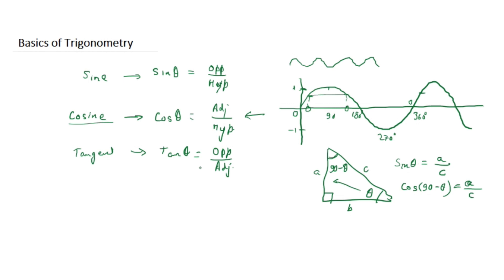These three ratios you have to remember. There is a small memory trick that everybody uses, called SOHCAHTOA. SOH means sine is opposite over hypotenuse, CAH means cosine is adjacent over hypotenuse, and TOA means tangent is opposite over adjacent. Just remember SOHCAHTOA for trigonometry.